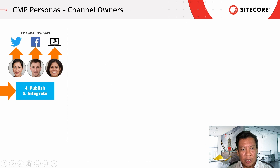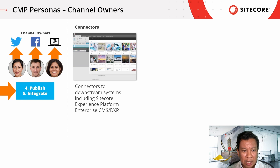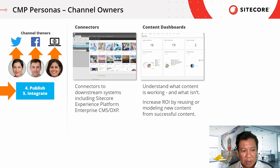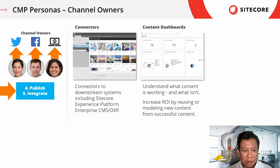Finally, let's look at the channel owners. They are responsible to take the approved content and publish it into the downstream channel. Sitecore CMP provides an out-of-the-box connector to Sitecore's Experience Platform Enterprise CMS. This allows website owners to seamlessly present the content on their website pages or mobile applications. The content dashboards allow channel owners to understand which content works and which doesn't, using content usage and impact analysis and analytics.